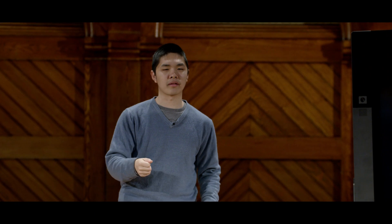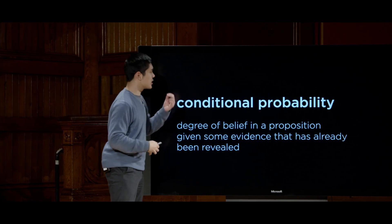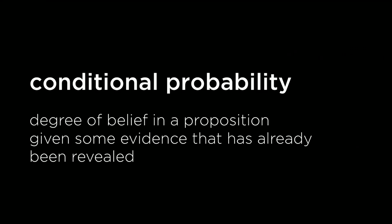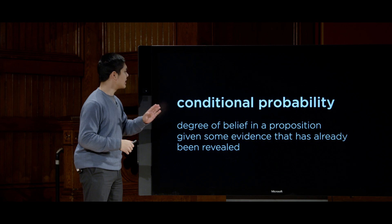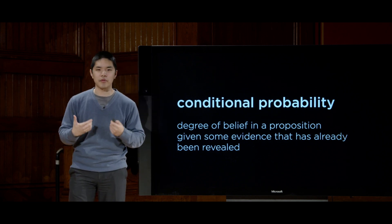But usually when we think about probability, especially for training an AI to make predictions, it's not unconditional probability but rather conditional probability. Conditional probability is the degree of belief in a proposition given some evidence that has already been revealed to us — so rather than having no original knowledge, we have some initial knowledge about how the world works.